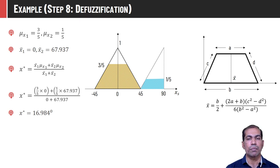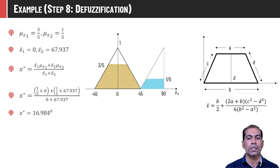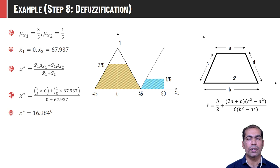We use the weighted average method here. We find the center of both fuzzy output polygons: the center of the first polygon is 0 and the center of the second is 67.93, with corresponding membership values 3/5 and 1/5. Putting all these values into the equation, we get the crisp value of 16.98 degrees.